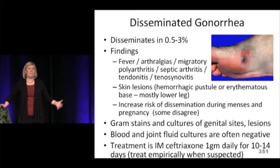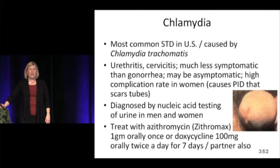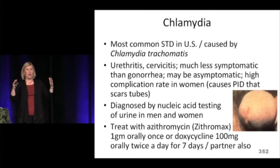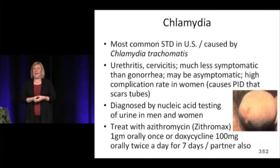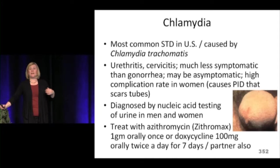Moving on to chlamydia — gonorrhea and chlamydia are best friends and go everywhere together. Chlamydia is the most common STD in the United States. It causes urethritis and cervicitis but is much less symptomatic than gonorrhea; women especially often don't know they have it. This leads to a high rate of complications including PID, scarring, and later ectopic pregnancy. Chlamydia is diagnosed by nucleic acid testing and treated with azithromycin 1 gram, or doxycycline 100 mg twice daily for seven days. Treat partners as well.